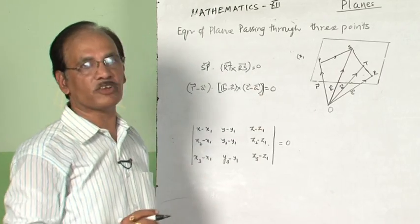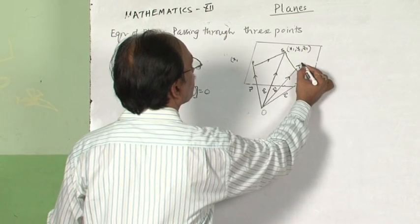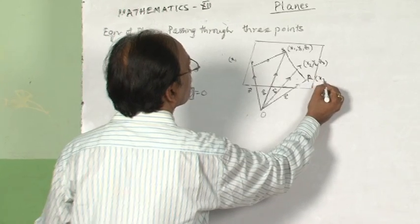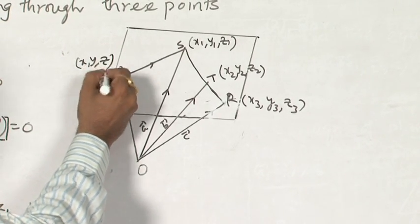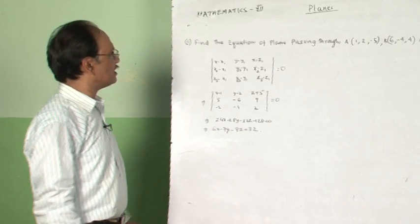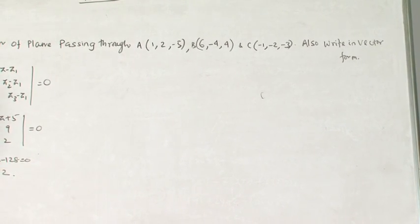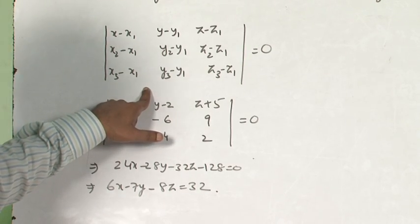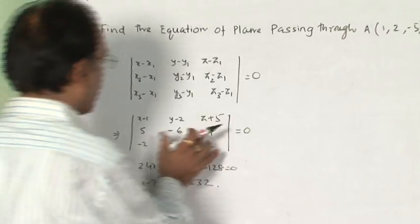If instead of position vectors, the coordinates are given — say S is (x₁, y₁, z₁), T is (x₂, y₂, z₂), and R is (x₃, y₃, z₃) — then taking the general point P as (x, y, z) and substituting, we get a determinant relation. In this question, find the equation of a plane passing through points A, B, C whose coordinates are given. We put the coordinates into this determinant formula.